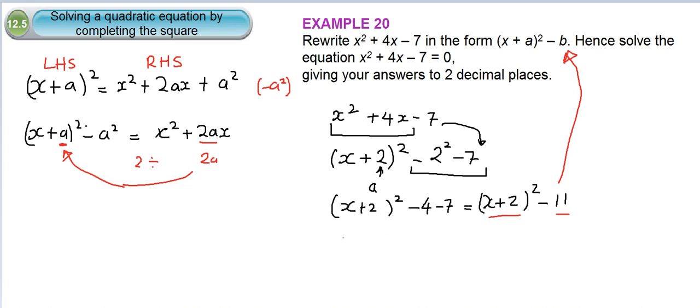So we're asked to solve it. In other words, we need to put the new expression that we have equal to 0. So let's do that here. x plus 2 squared minus 11 equals 0. The first thing I would do here is to add 11 to both sides. So x plus 2 squared equals 11.